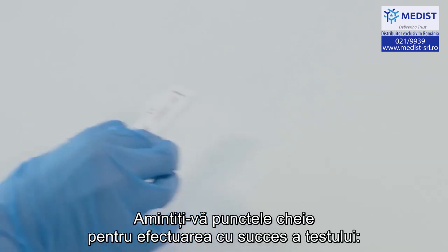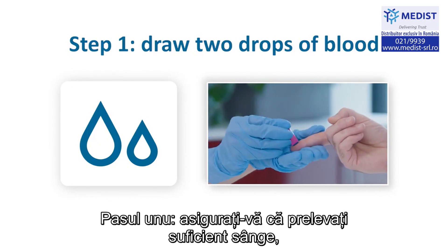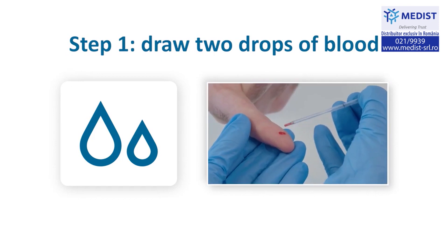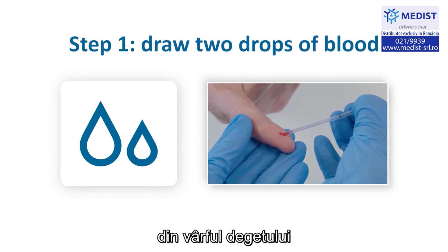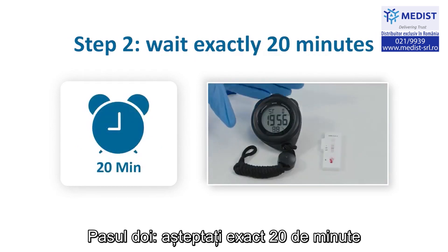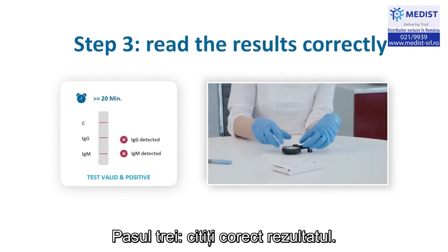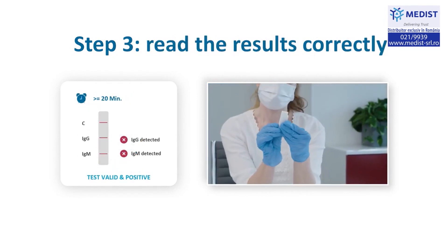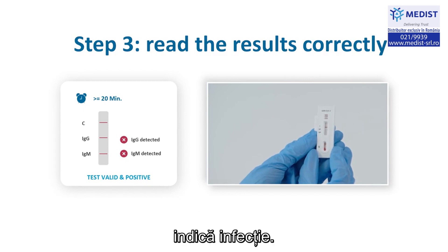Remember the key points to conducting a successful test. 1. Ensure you collect enough blood from the subject's fingertip and apply to the test cassette. 2. Wait exactly 20 minutes to read the test — no earlier, no later. 3. Read the result correctly. Even a faint line at either IgM or IgG indicates infection.